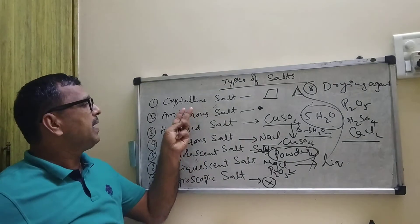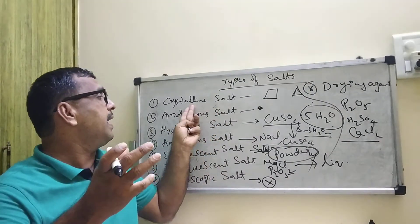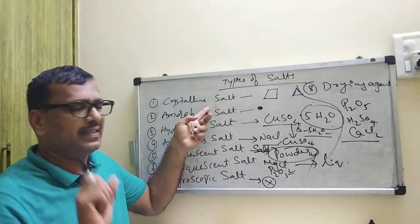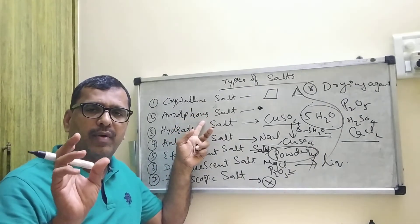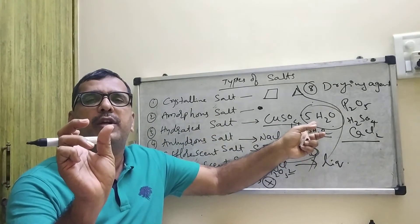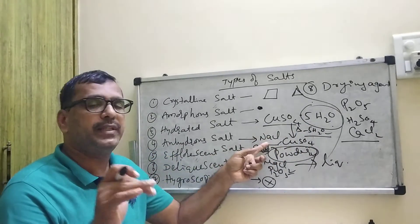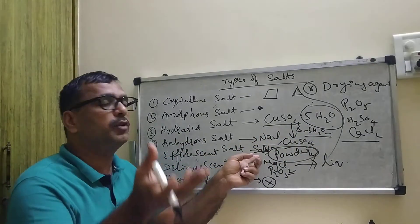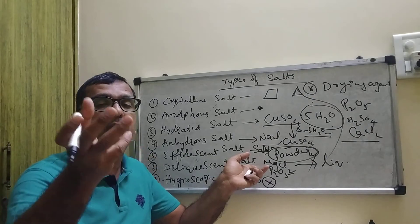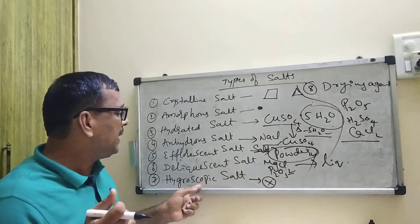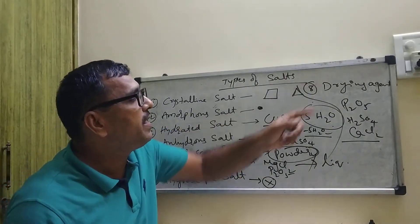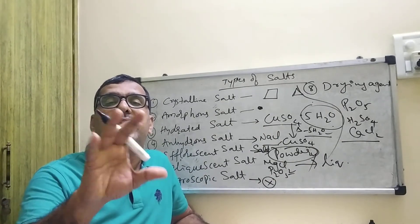To recap: crystalline salts are bonded at definite angles and have a definite geometric shape; amorphous salts are powdery with no definite shape. Hydrated means fixed with a definite number of water molecules; anhydrous means no water molecules. Effluorescent — a salt exposed to air loses water of crystallization and changes into a powdery amorphous substance. Deliquescent — a salt exposed to air absorbs moisture and changes into a liquid state. Hygroscopic — a salt exposed to air absorbs moisture but does not change its state. Drying agents absorb moisture but do not change their state.